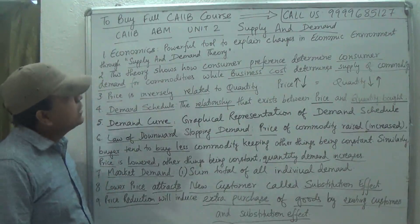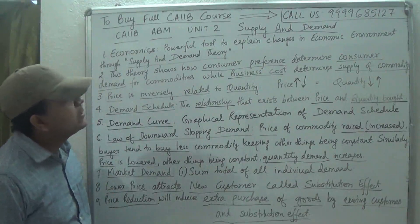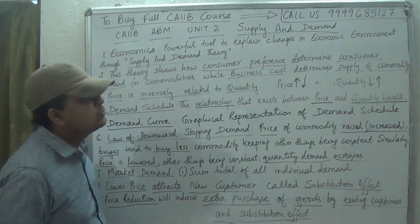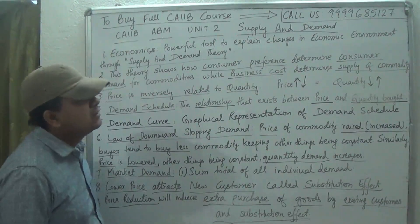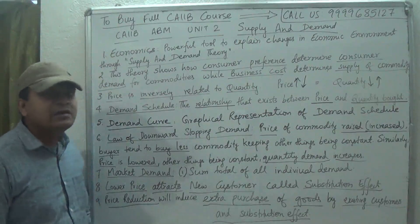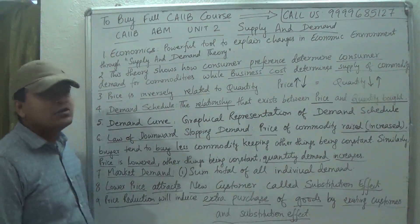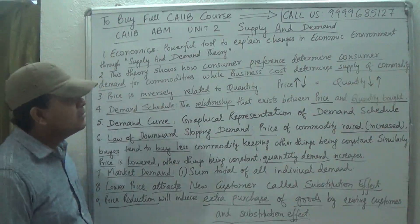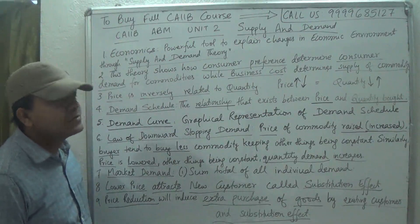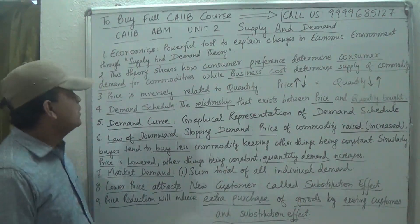What we understand by supply and demand theory: it simply tells us the consumer preference, and it helps in determining what is the consumer demand for any particular commodity, while business cost determines the supply of the commodity.